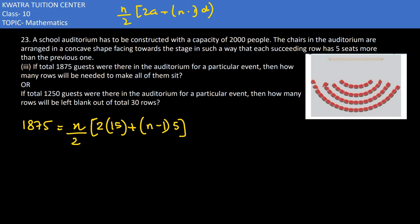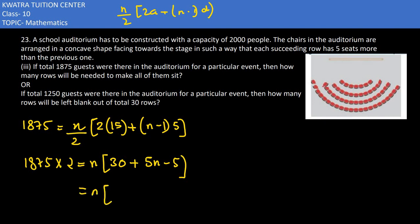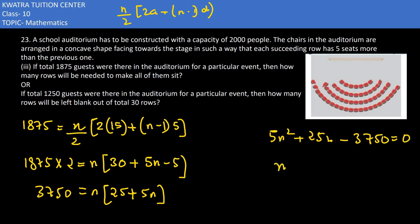Multiplying both sides, 1875 into 2 gives 3750. On the right side: 2 into 15 is 30, so we have n times (30 + (n−1)×5), which expands to 5n squared plus 25n. So 5n squared plus 25n minus 3750 equals 0. Taking 5 as common gives n squared plus 5n minus 750 equals 0.